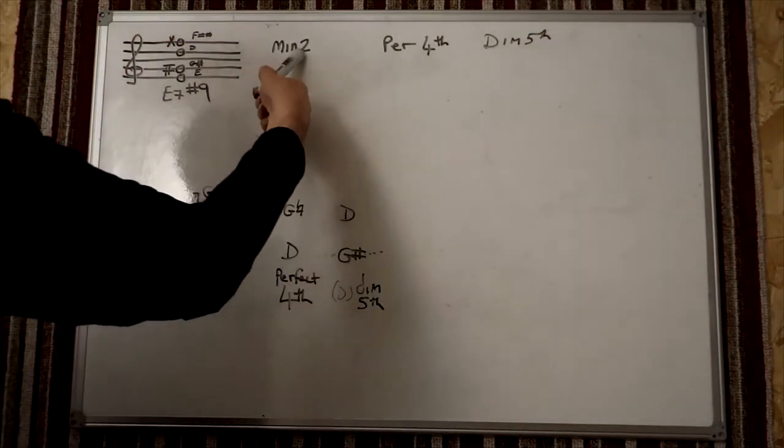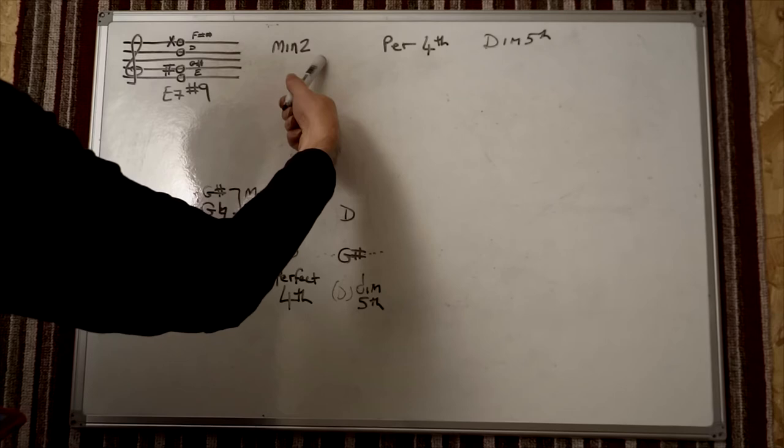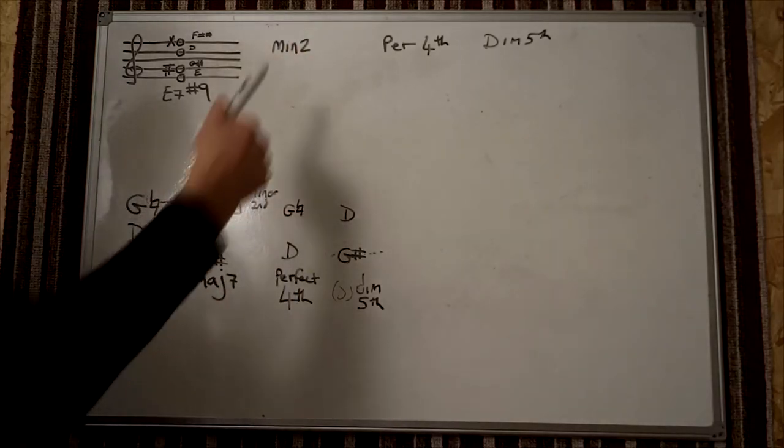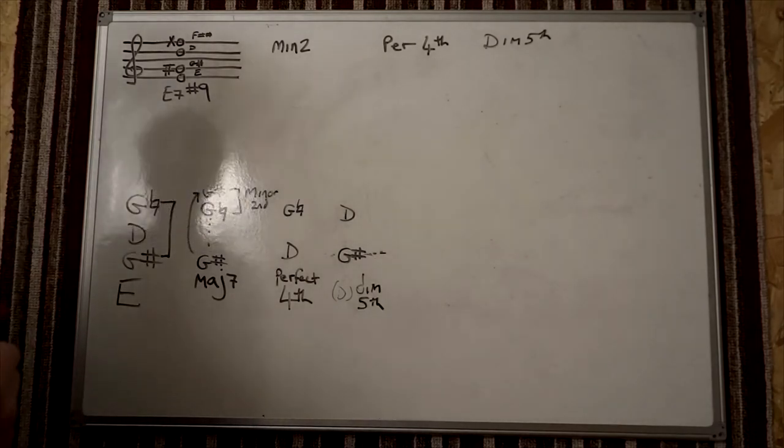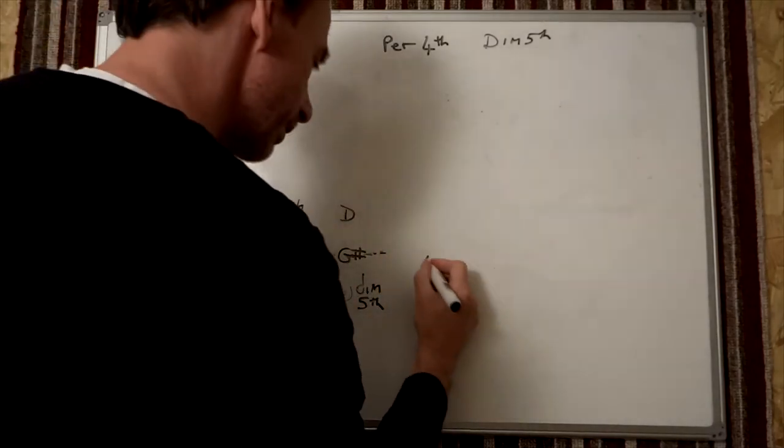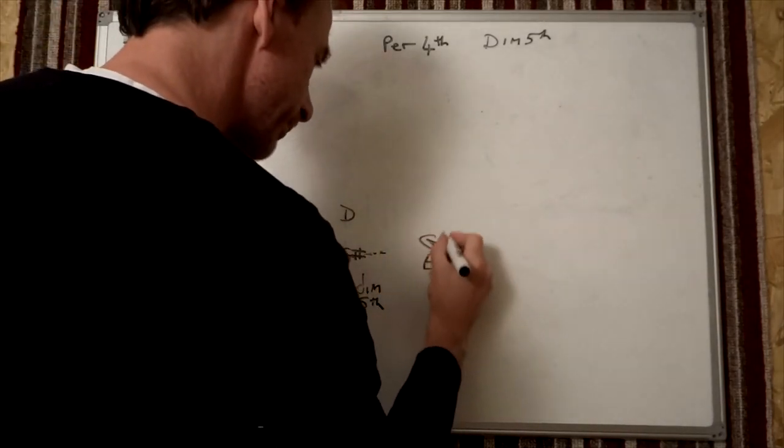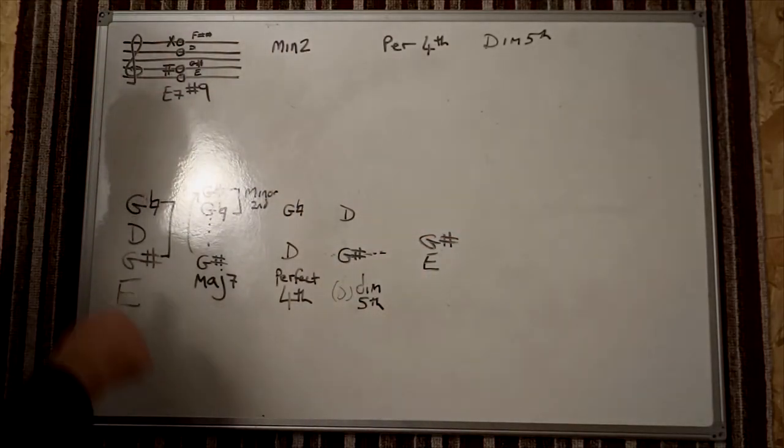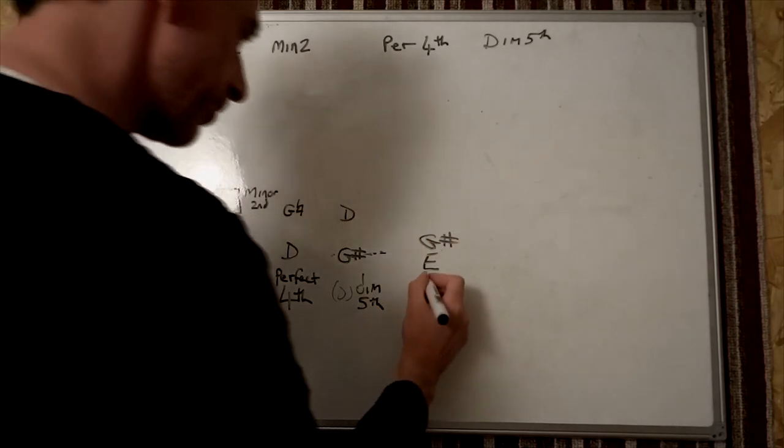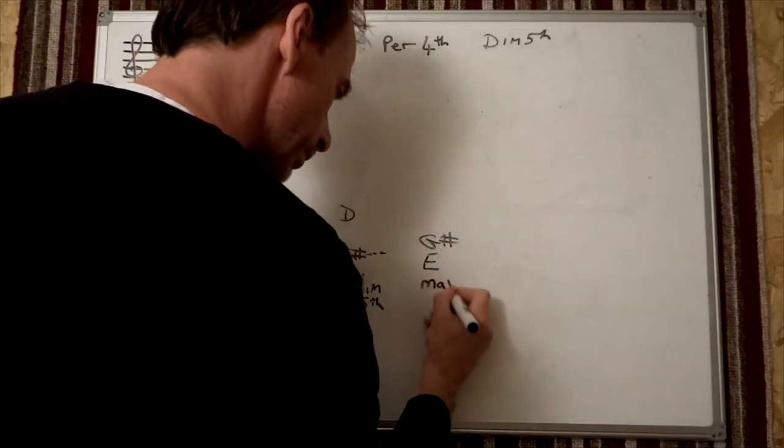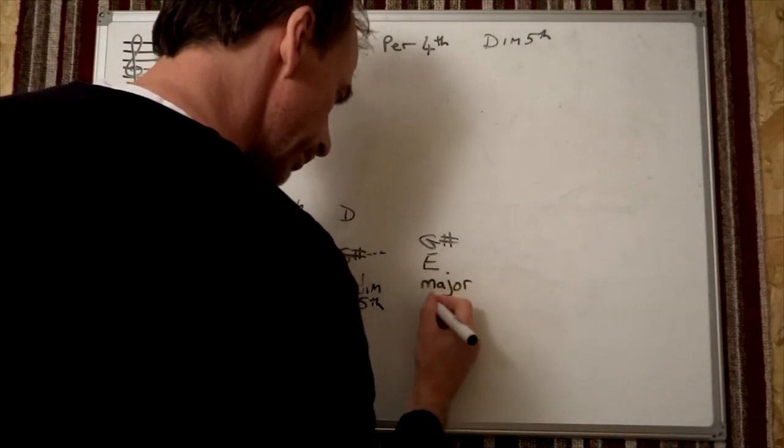So we need a major second, a minor third, and a major third to get the full set all the way up to that halfway point. We've got the E and the G-sharp. This interval here, that's a major third.